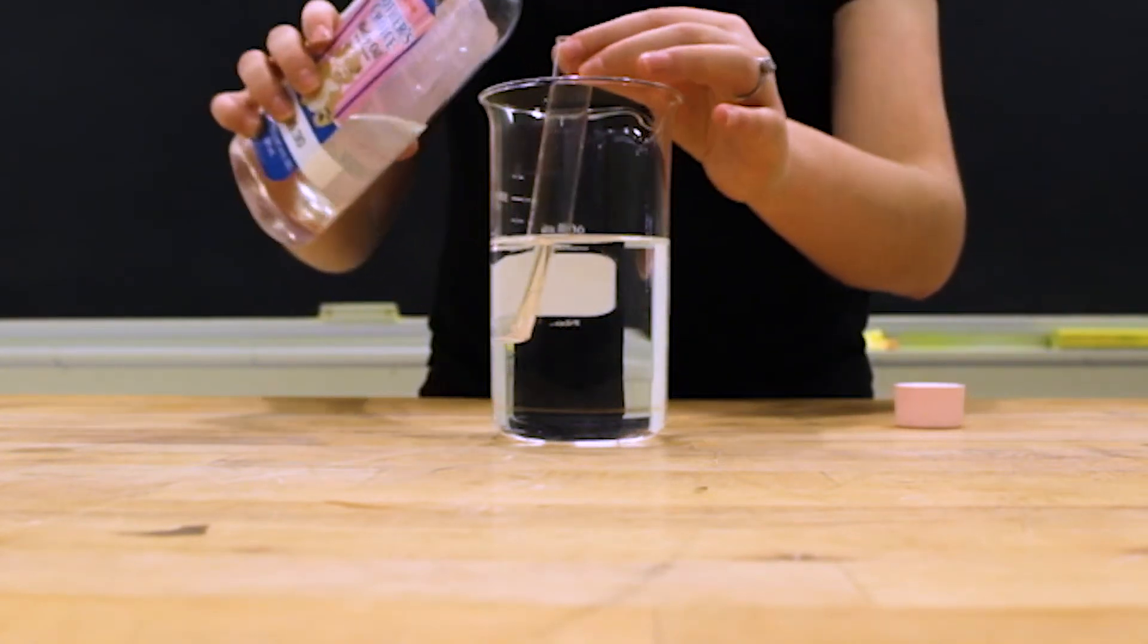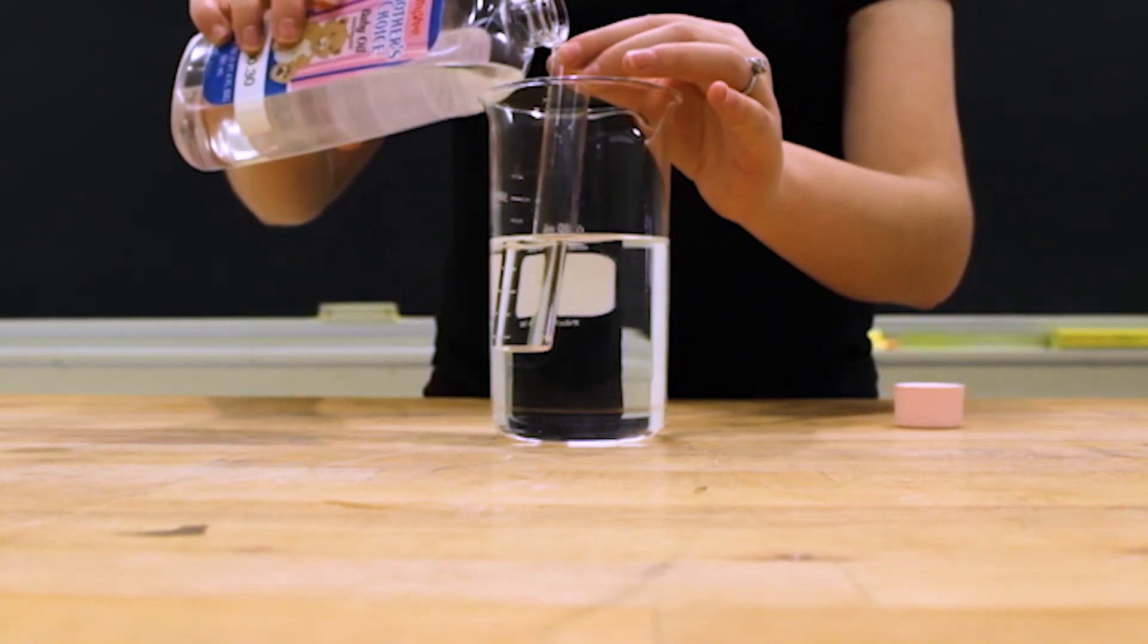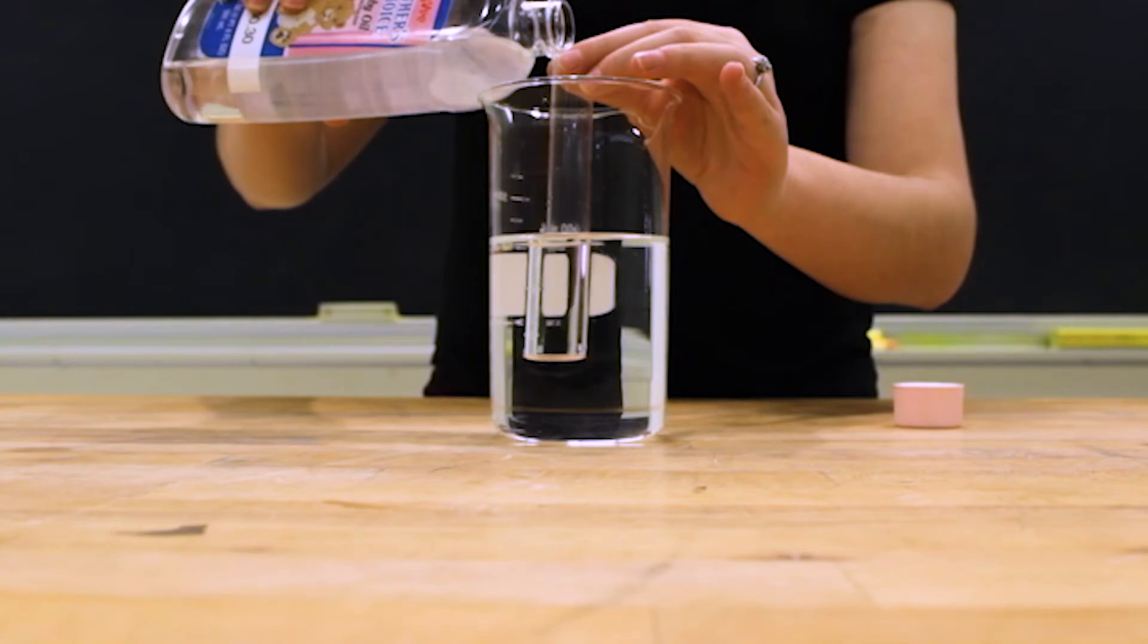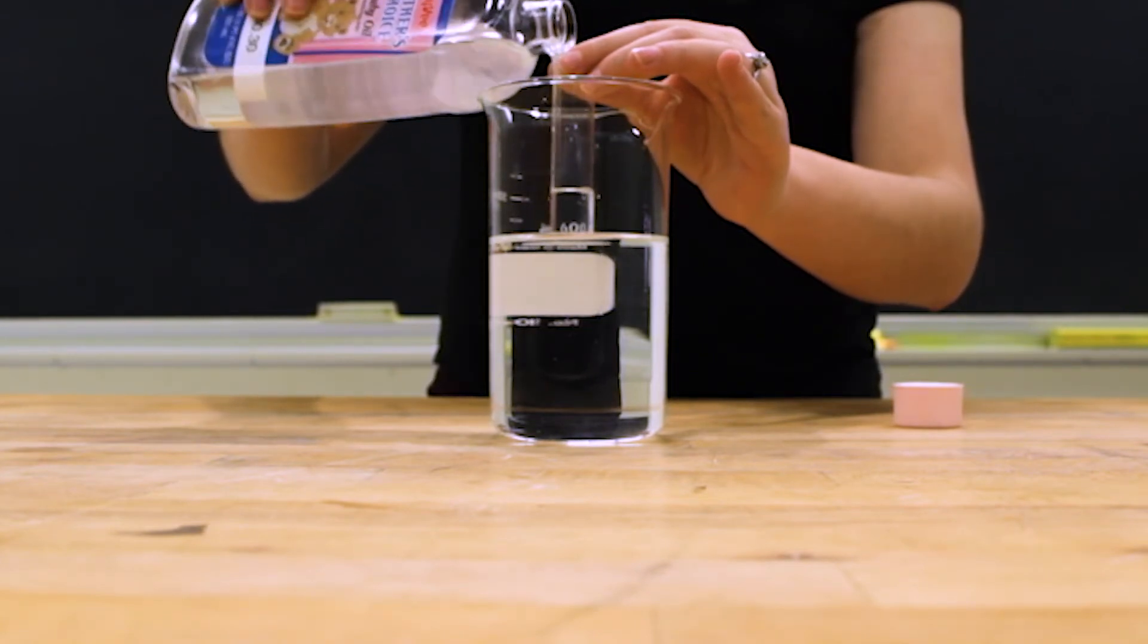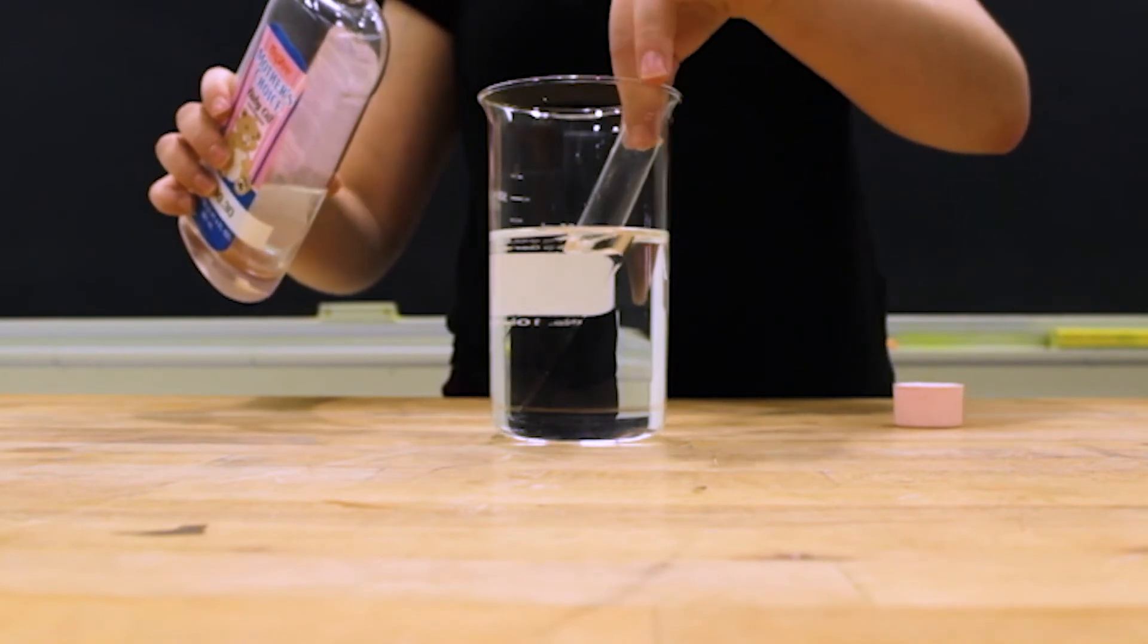Now I place a Pyrex test tube in a beaker of mineral oil. N equals 1.46 and its presence is quite obvious. However if I also fill the test tube with mineral oil it becomes very hard to see.